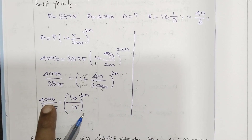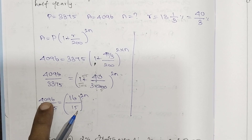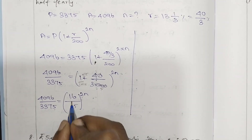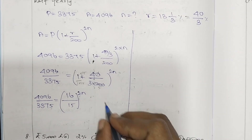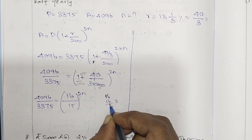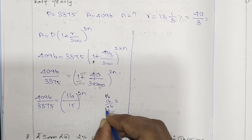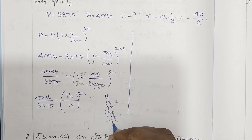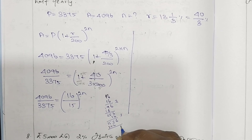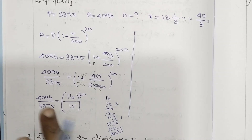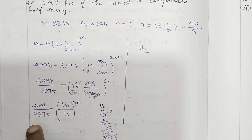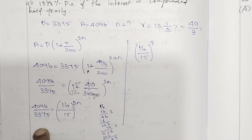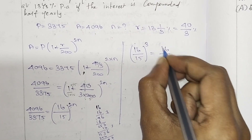Now we find that 4096 equals 16 cubed and 3375 equals 15 cubed. So the left side is 16 by 15 whole power 3. Comparing: 16 by 15 whole power 2N equals 16 by 15 whole power 3. The bases are the same, so 2N equals 3, meaning the base is matched on both sides.